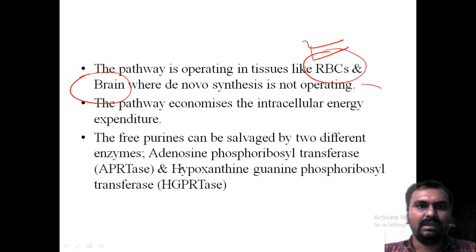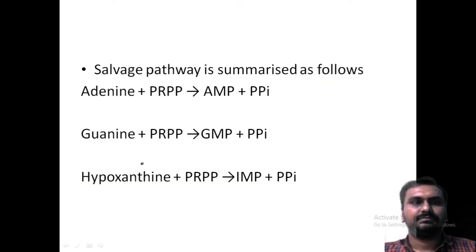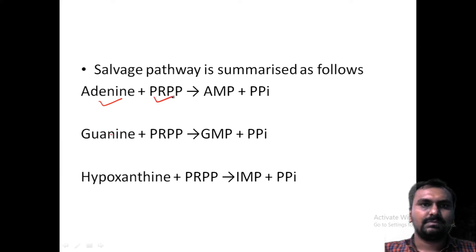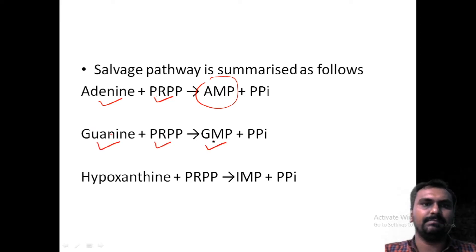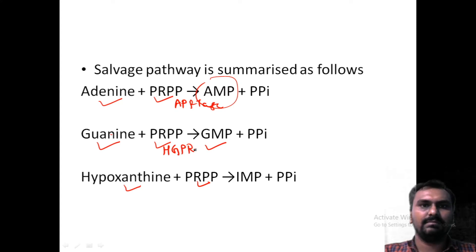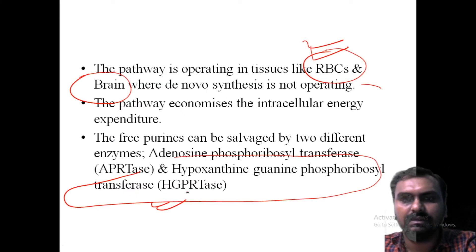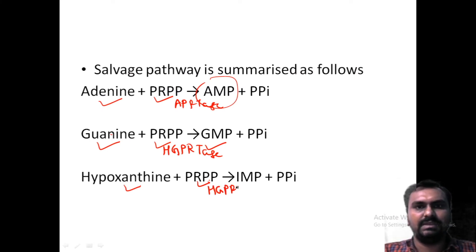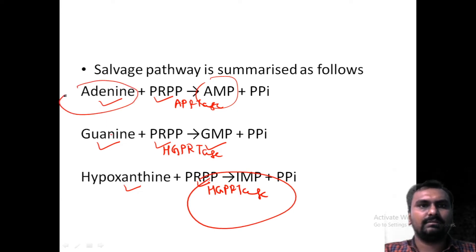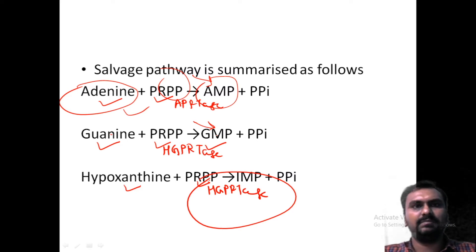Two enzymes are involved: APRT — adenine phosphoribosyl transferase — and HGPRT — hypoxanthine guanine phosphoribosyl transferase. Adenine reacts with PRPP to form AMP directly. Guanine plus PRPP will form GMP, while hypoxanthine and PRPP will form IMP. The enzyme for adenine is adenine phosphoribosyl transferase, and for guanine and hypoxanthine it is hypoxanthine guanine phosphoribosyl transferase. From the breakdown products, AMP and GMP are re-synthesized — that is why the breakdown products are salvaged and waste does not occur.